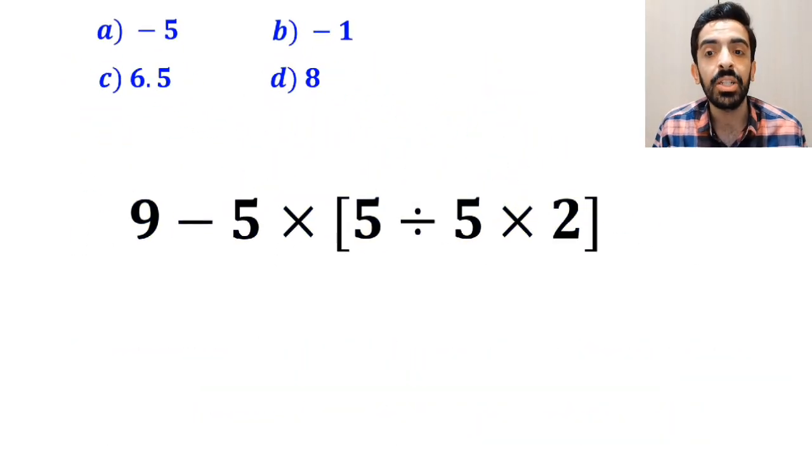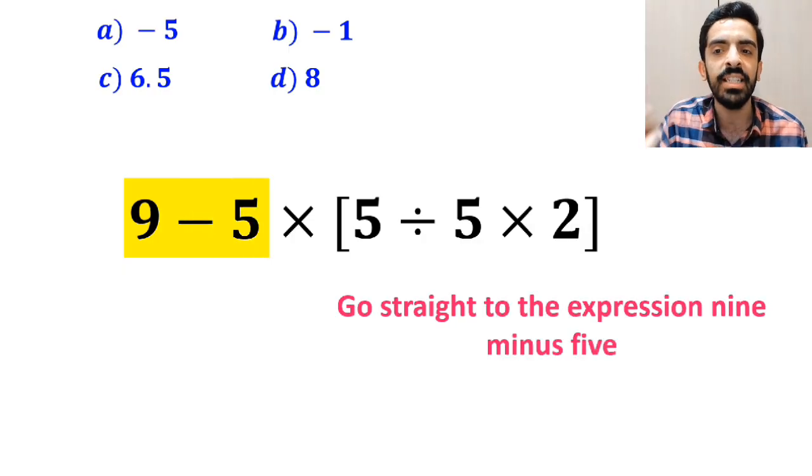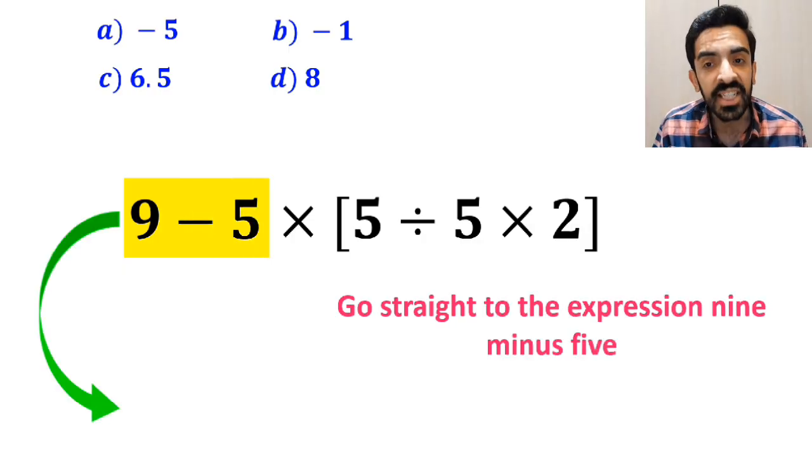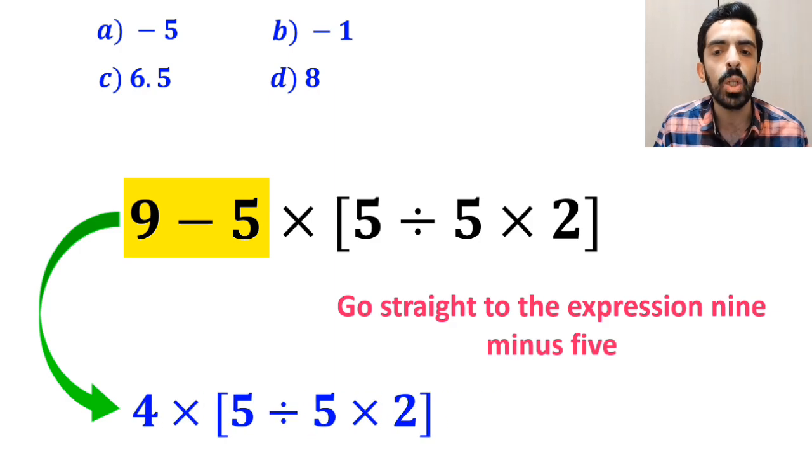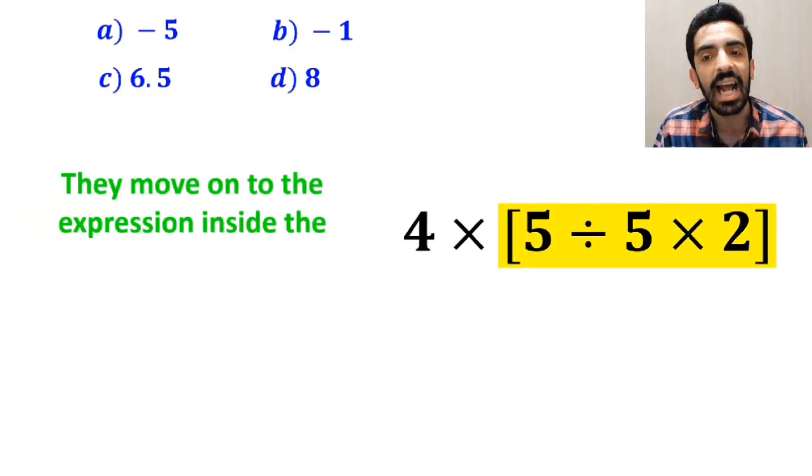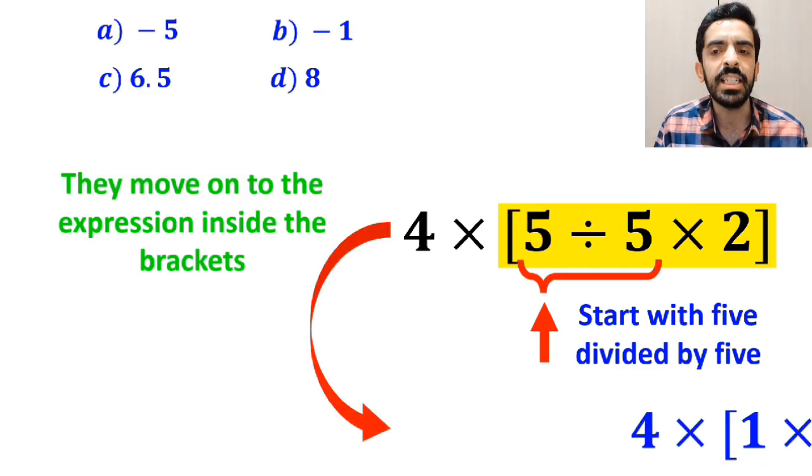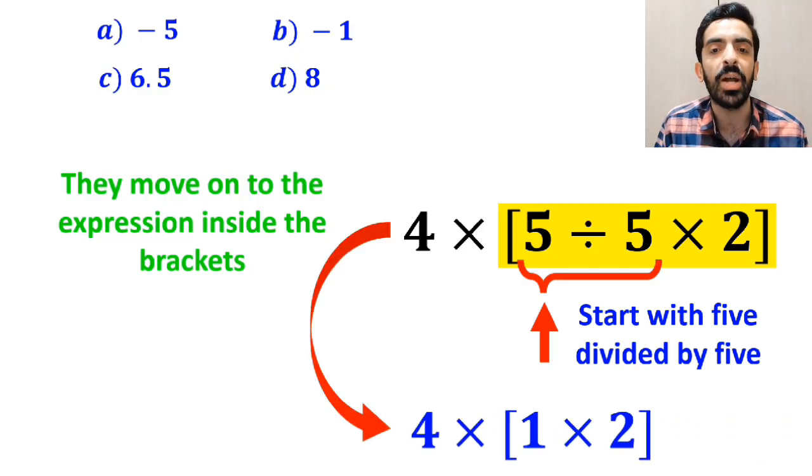Many people, at first, go straight to the expression 9 minus 5, which I've highlighted in yellow. And instead of this expression, they write 4 multiplied by 5 divided by 5 times 2 inside the brackets. And the next step, they move on to the expression inside the brackets and start with 5 divided by 5. So, this expression simplifies to 4 multiplied by 1 times 2 inside the brackets.